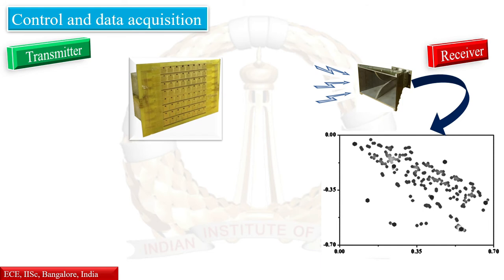Therefore, the initial calibration setup would require parsing through all possible switching states of the array. We simulated this scenario, and then realized hardware for the transmitter to conduct experiments to verify these.